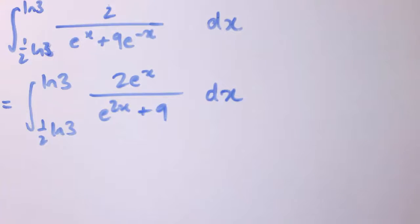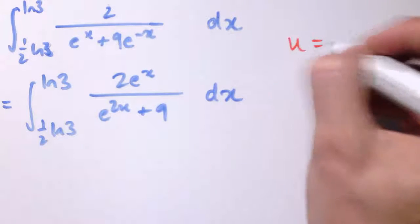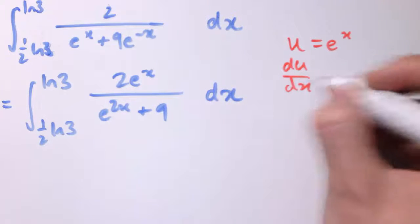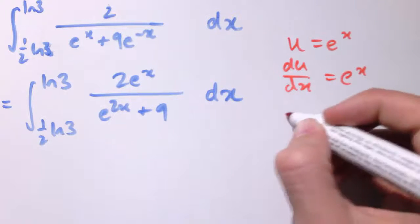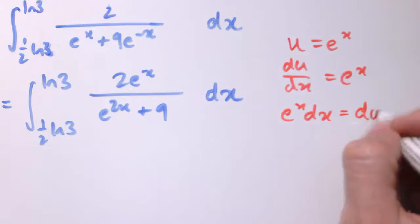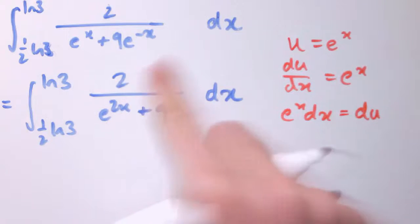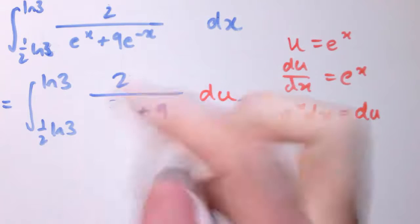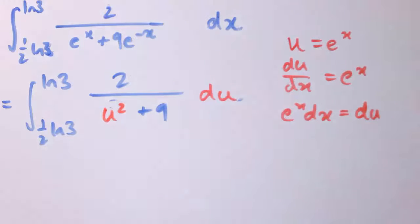And then making the substitution again, u equals e^x. So exactly as before, we have du/dx equals e^x and e^x dx gives us du. So I can get rid of my e^x dx and replace it with du. And my e^(2x) is u^2 again.